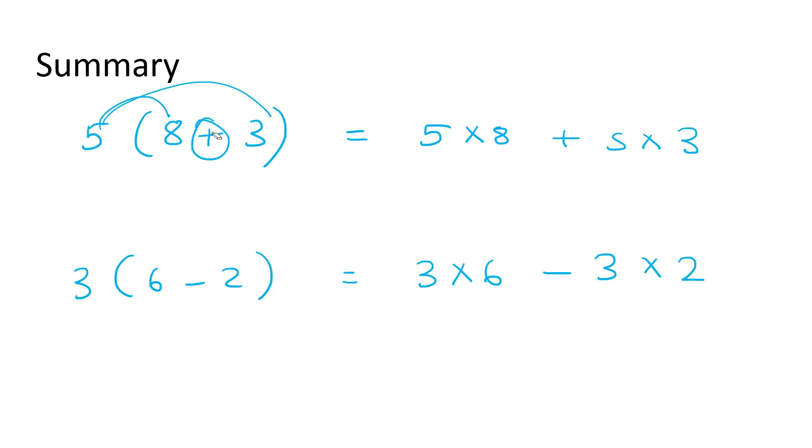And then, the other thing I want you to remember is that if they ask you in a test if it's associative, commutative, or distributive property, the way that you can know it's distributive is when you have brackets on the one side, but there's no brackets on the other side.